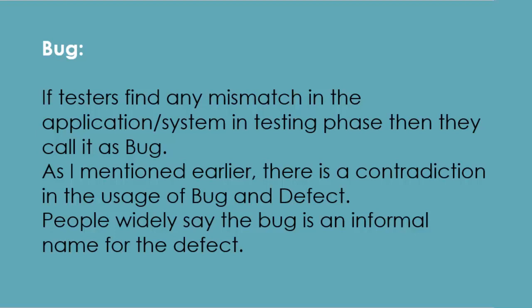What is a bug? If testers find any mismatch in the application or system during the testing phase, they call it a bug. As already noted, there is a contradiction in the usage of bug and defect — people widely say that bug is simply an informal name for defect.